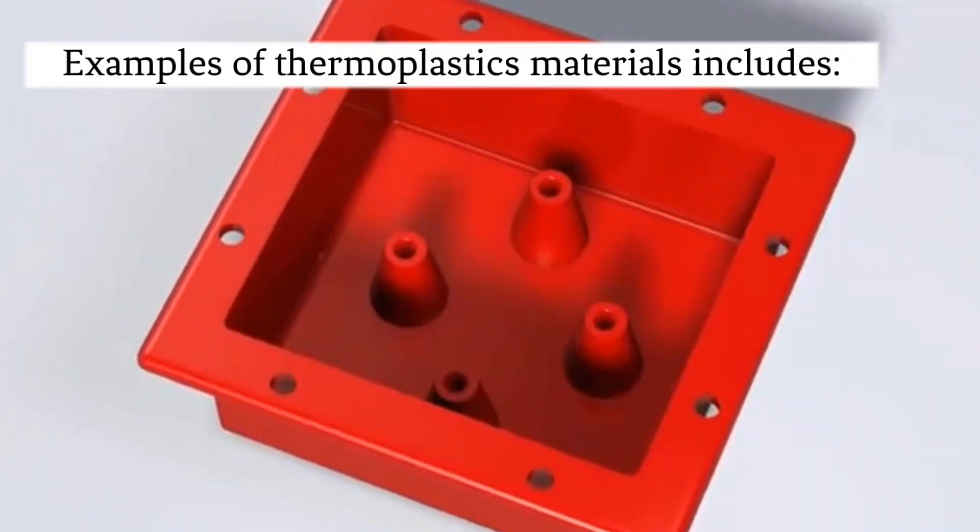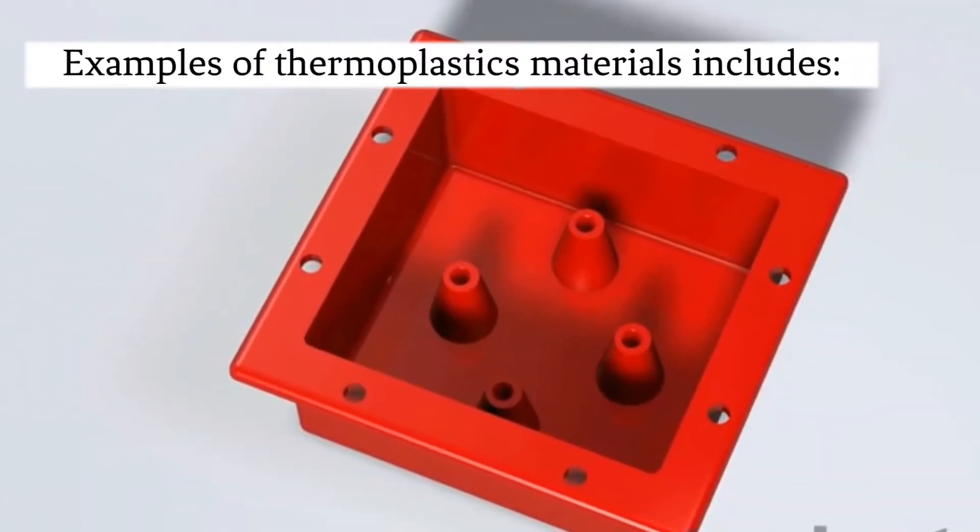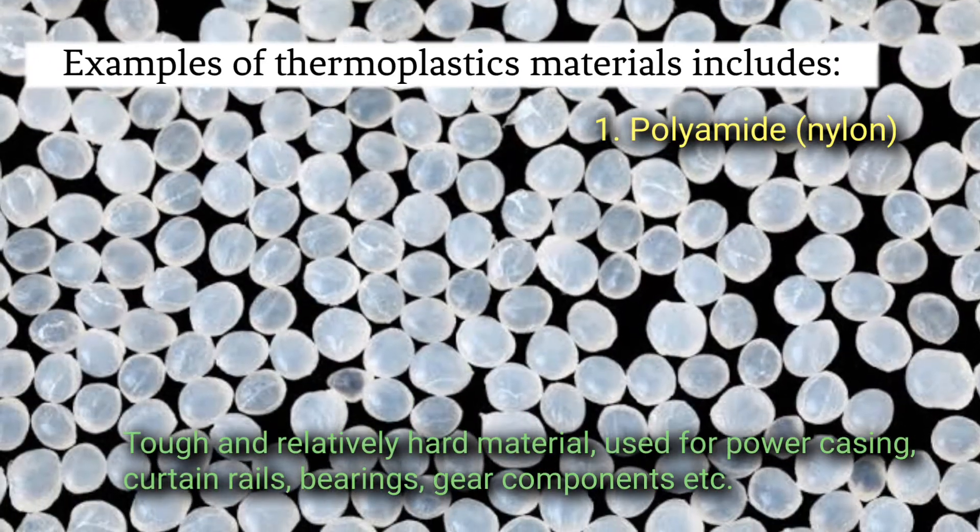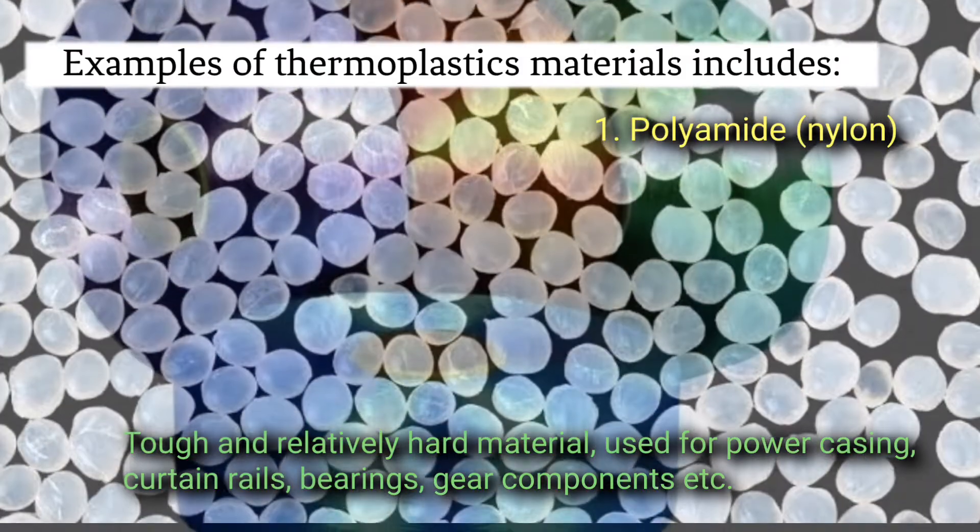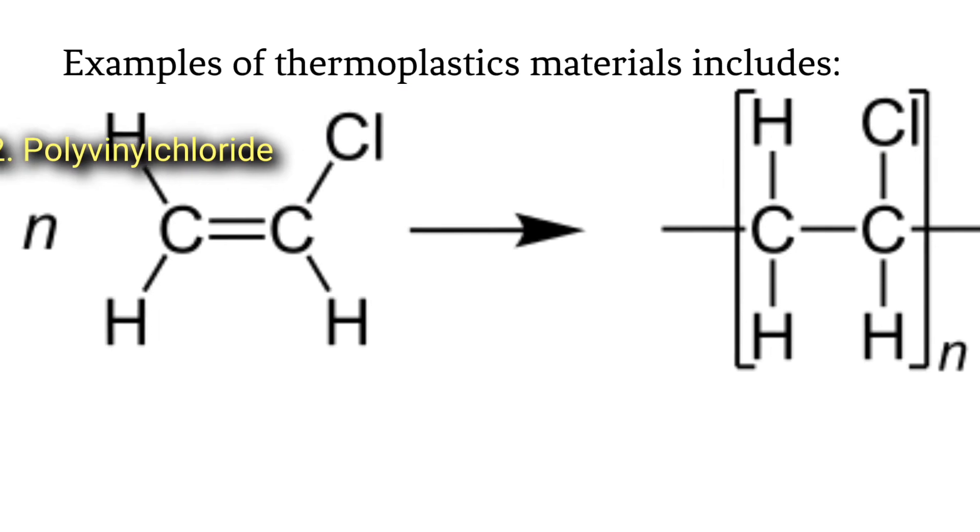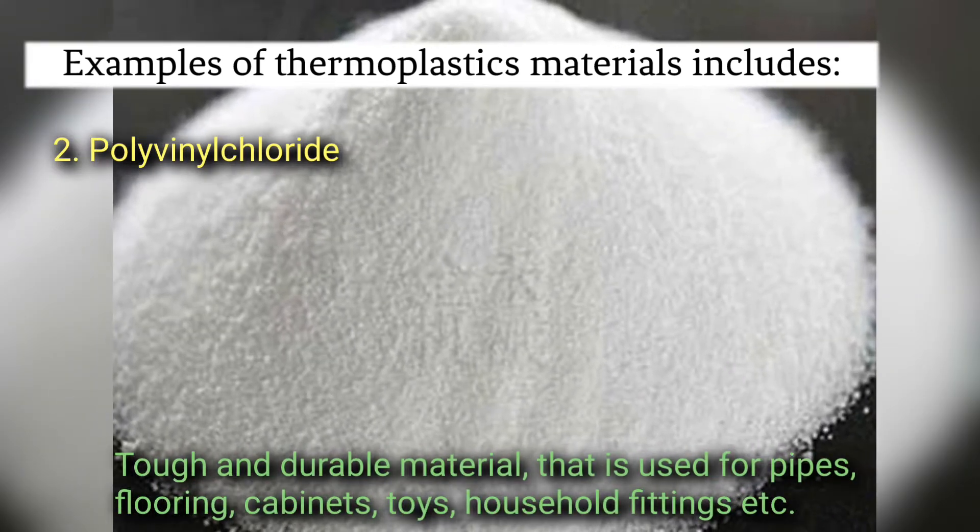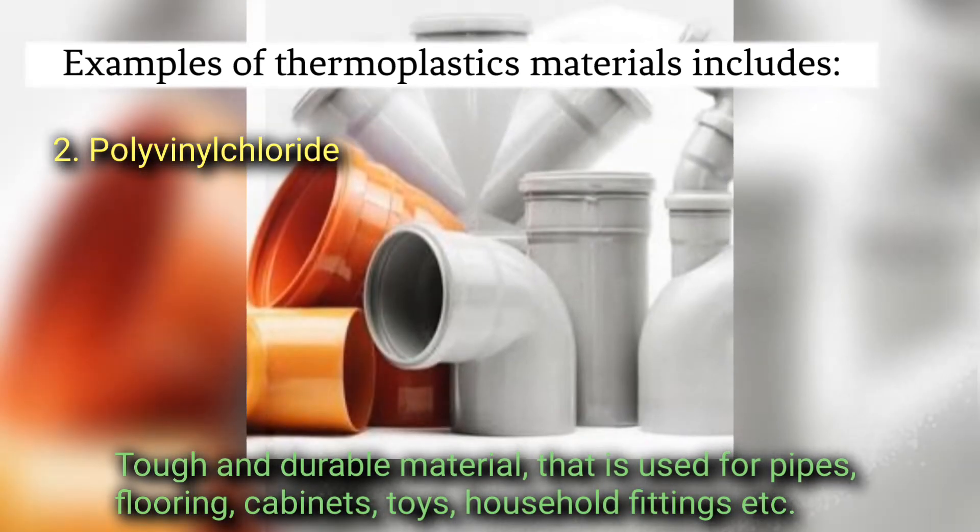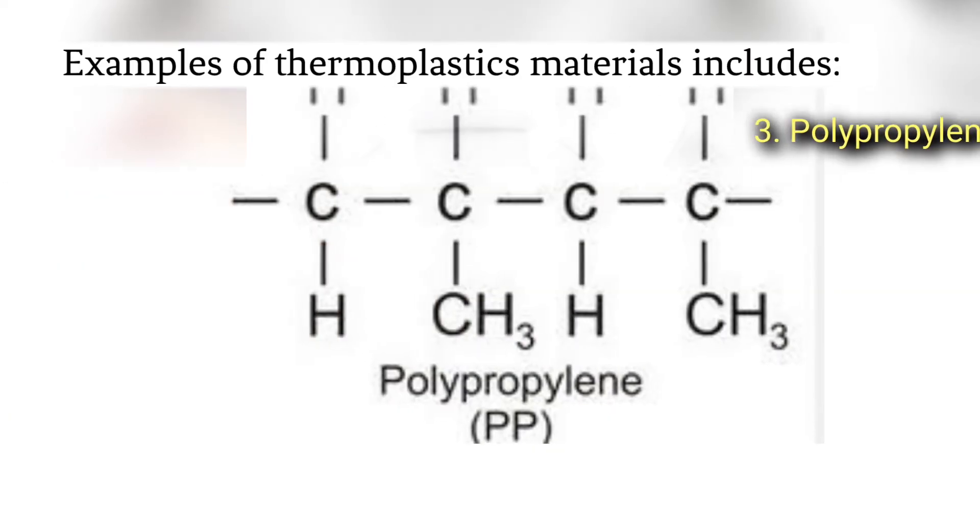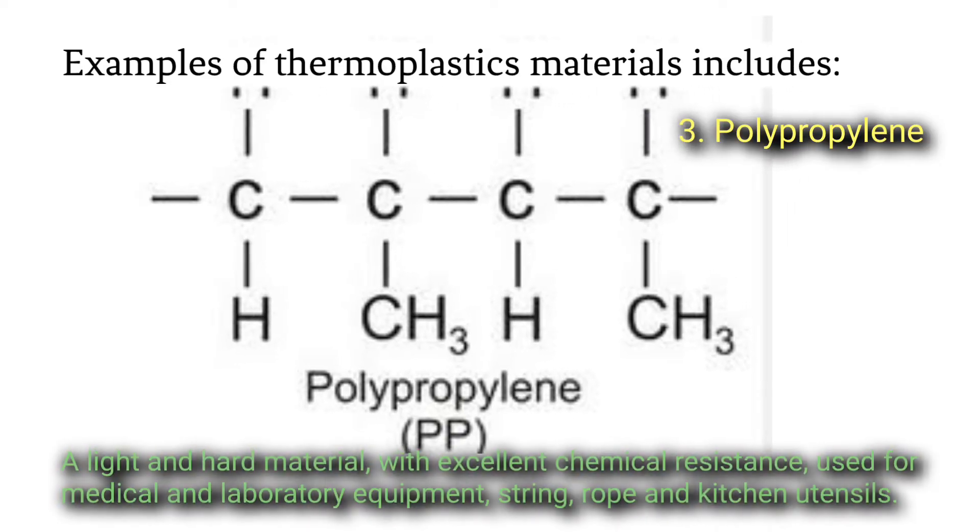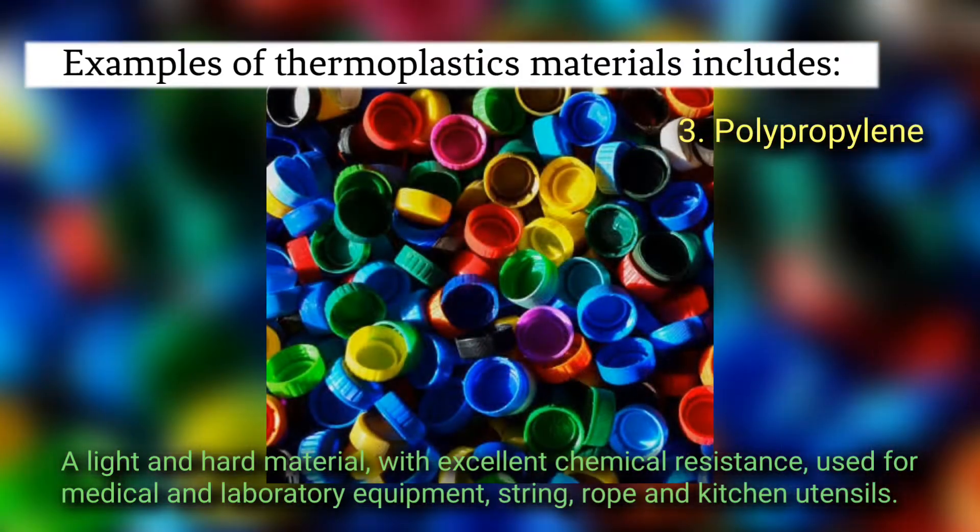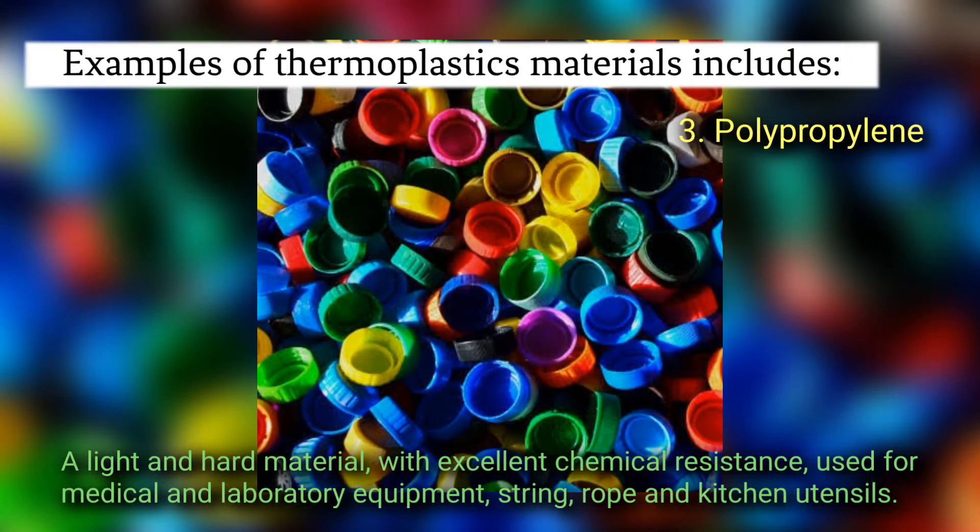Polyvinyl chloride - tough and durable material that is used for pipes, flooring, cabinets, toys, household fittings, etc. Polypropylene - a light and hard material with excellent chemical resistance used for medical and laboratory equipment, string, rope, and kitchen utensils.